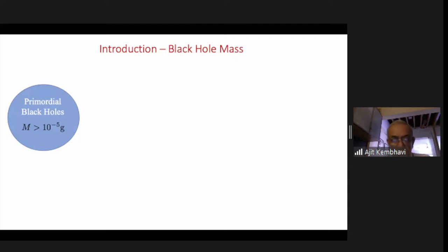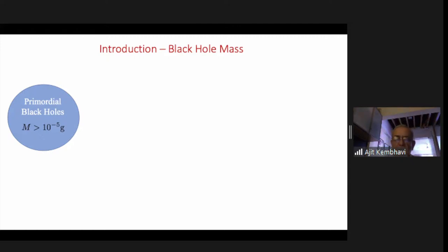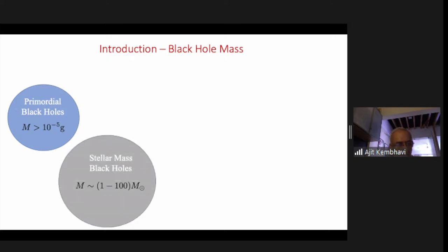The rate of radiation is extremely low and can become significant only for black holes of around 10 to the minus 5 grams. The question is where and how do you make such black holes — they can only come from cosmological initial perturbations, but I shall not go into that. Then you have the stellar mass black holes, which come out of the evolution of stars, with a mass of between 1 and 100 solar masses.